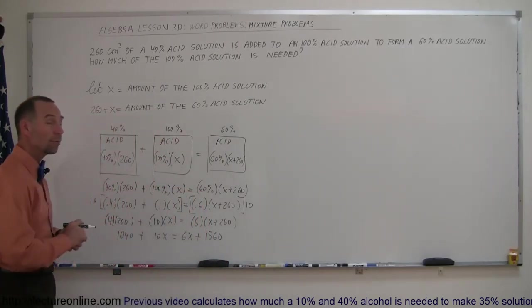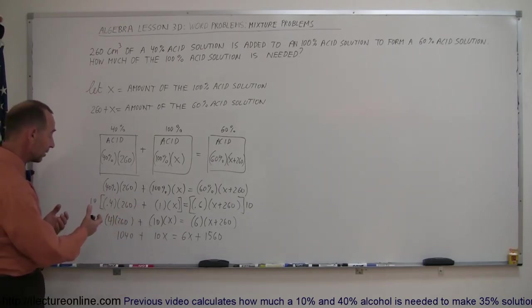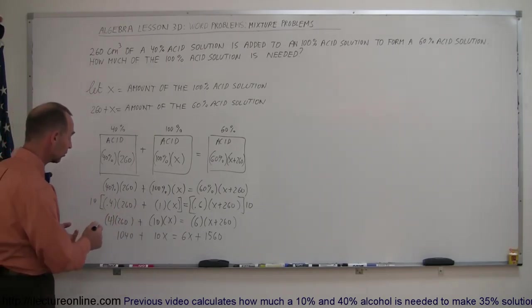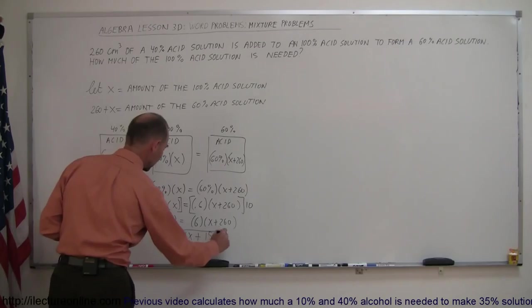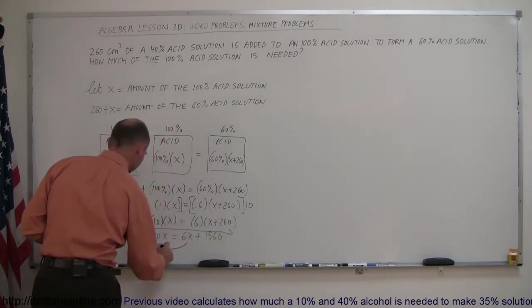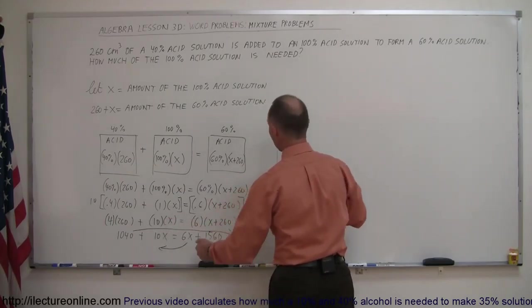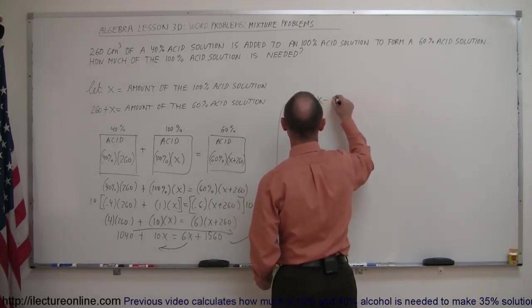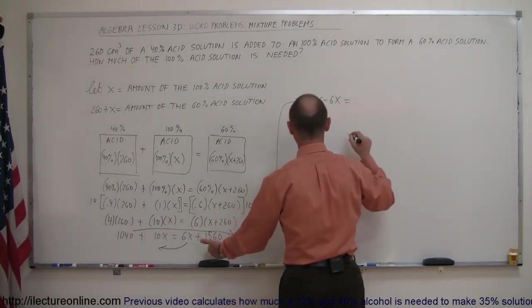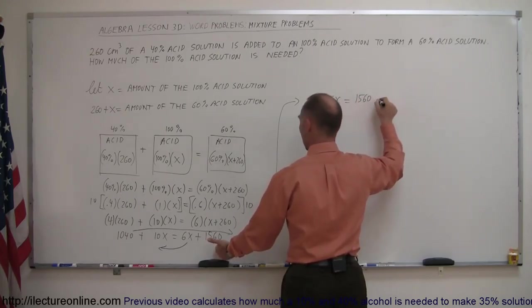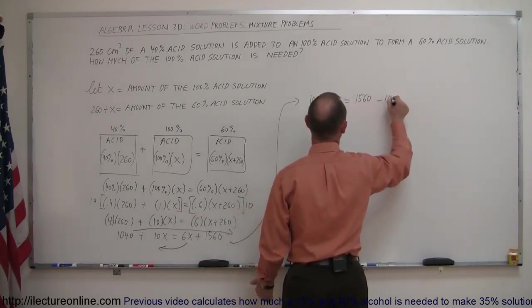Now we move all the terms with the X to one side, all the terms without the X to the other side. So the 1040 goes over here and the 6X goes over here. When we do that, we end up with on the left side 10X minus 6X equals, on the right side, 1560 minus 1040.